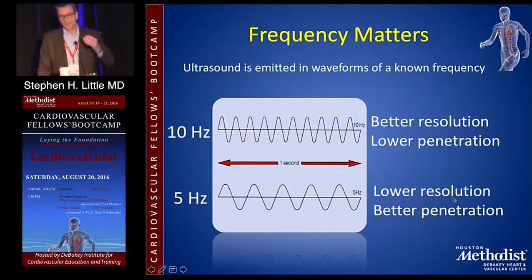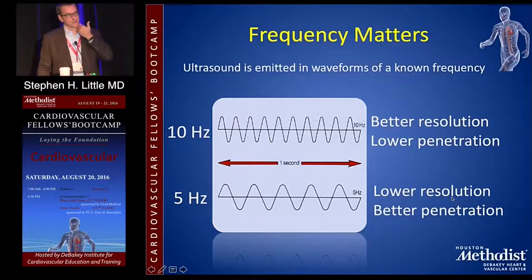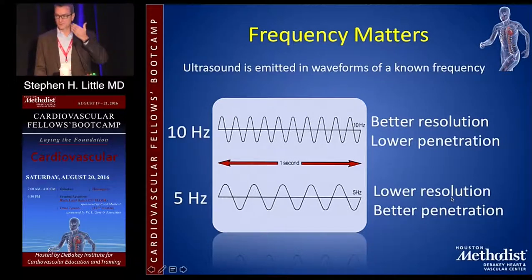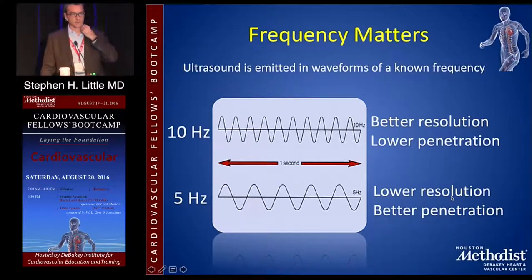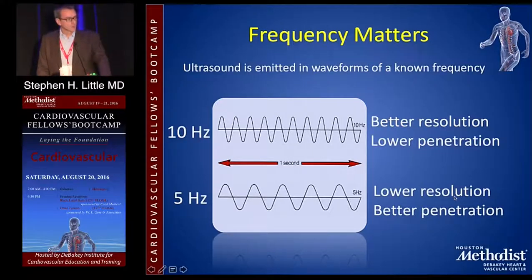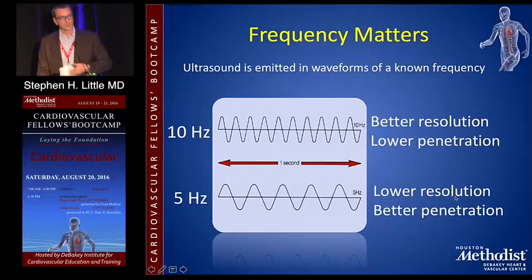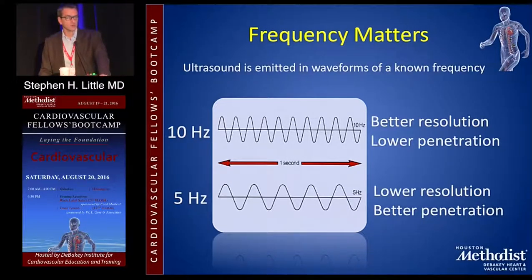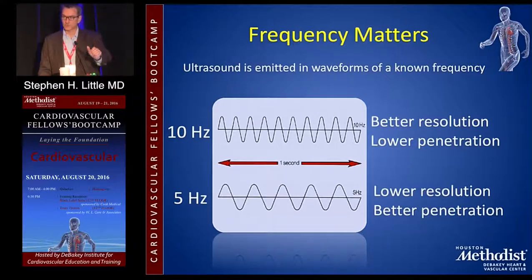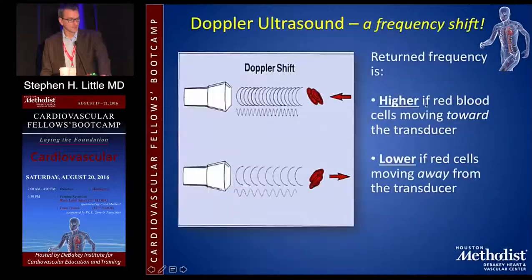For example, a carotid ultrasound images only about a centimeter and a half — you use a very high frequency probe, very nice resolution, very close to the skin. Whereas scanning from the belly looking up at the atria requires going 15 to 18 centimeters, so resolution will be lower because frequency has to be lower. This is the fundamental tradeoff between resolution and frequency.